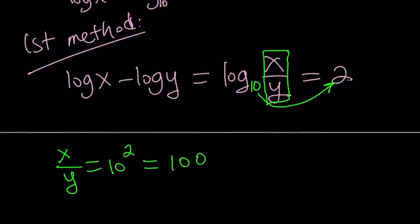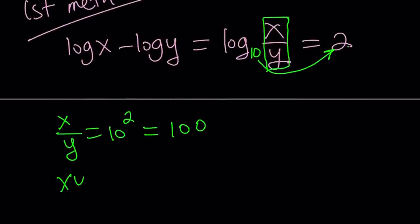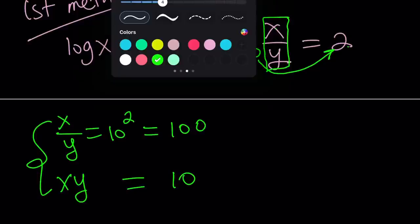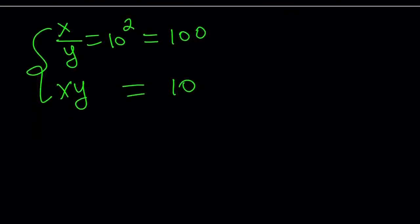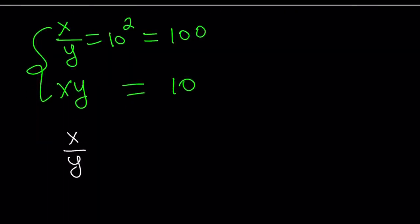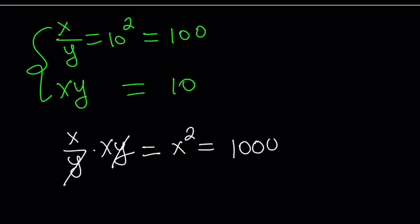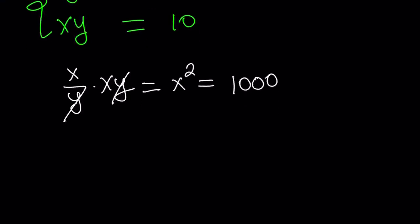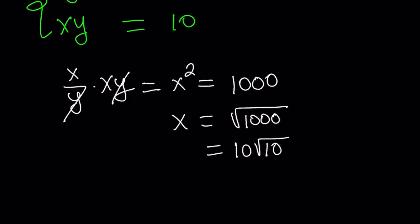So from here we can get x over y equals 10 squared, which is 100. So x over y equals 100, and we also know xy is equal to 10. I can go ahead and multiply x/y times xy — the y cancels out, giving us x squared. But 100 times 10 is 1,000. So x is equal to the square root of 1,000, plus or minus. But x cannot be negative, so we take the positive solution: x equals the square root of 1,000. Since 1,000 is 100 times 10, we can also write this as 10 times the square root of 10.